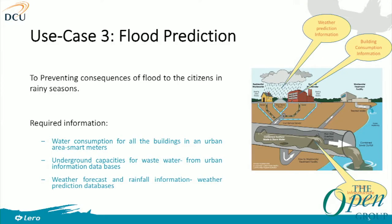We have another use case showing how information and data from different domains can produce new city services. To prevent flooding in the city, we can get information from weather prediction databases and data from buildings about underground capacity to store water — for example, rainwater. By putting these things together, we can detect if there is any possibility of flooding in an area. This can also be used for urban planning and infrastructure planning, because based on underground water capacity, we can determine what structures are required for the urban area and use it for designing city infrastructure.